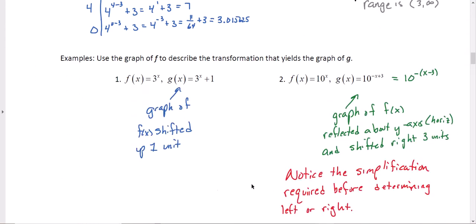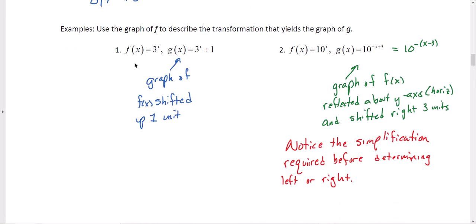Now, let's use these graphs to describe the transformations. Alright, so we start with f(x) = 3^x. Our new function, g(x) = 3^x + 1. The only thing that's changed is the plus 1 on the outside, so I know that my graph was shifted up one unit.